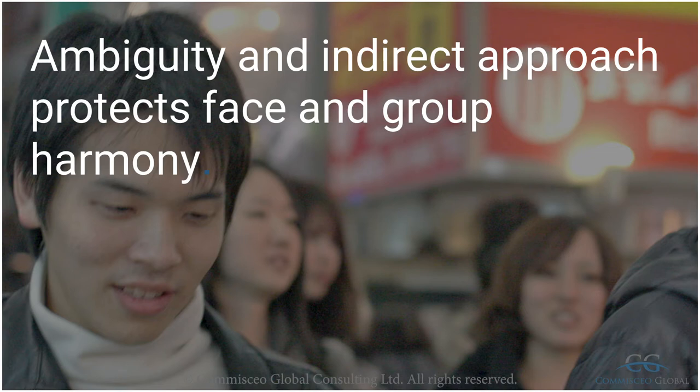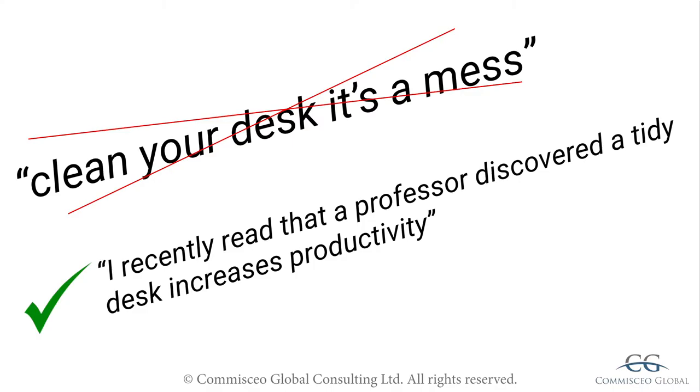Much of the time, this indirect approach is trying to avoid saying anything that could be misunderstood, that could result in blame, or it may simply be to show politeness and respect. A very simple example would be a boss asking an employee to tidy their desk. They would never just say 'clean your desk, it's a mess' — it would always be something along the lines of 'I recently read that a professor discovered that a tidy desk increases productivity,' or they may simply look at the desk, look at the employee, and through a simple look of the eyes show their disapproval. Both ways avoid being direct and rely on the employee to understand exactly what is being communicated. That's why, if you come from a culture that values being direct, it's important to tone down how you speak, and also be more conscious in how you listen.